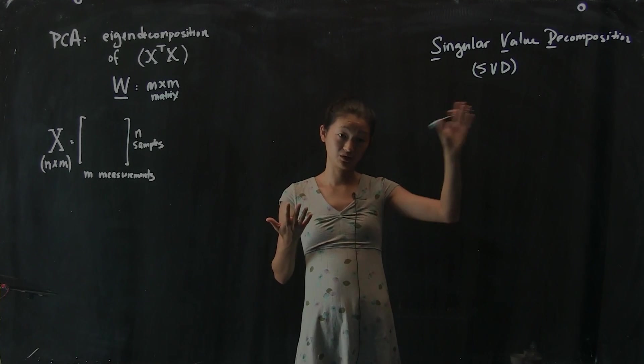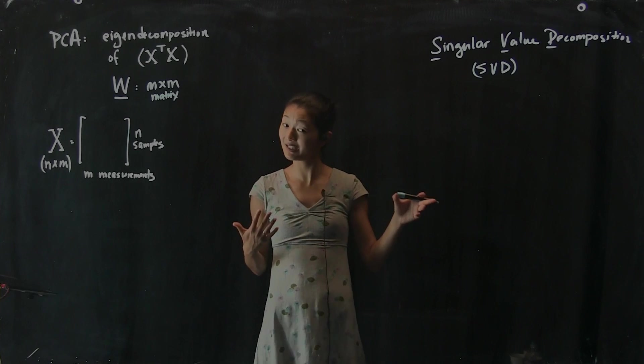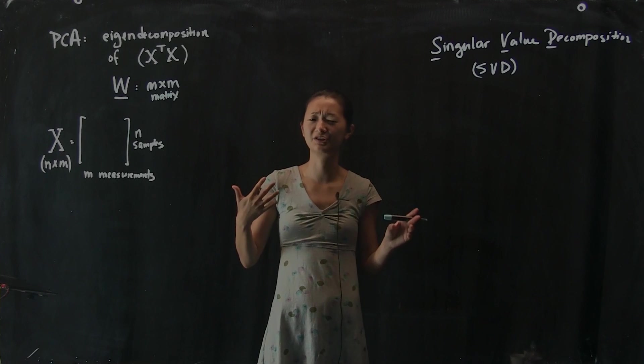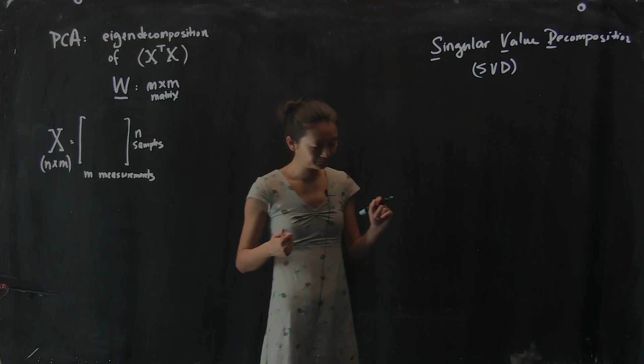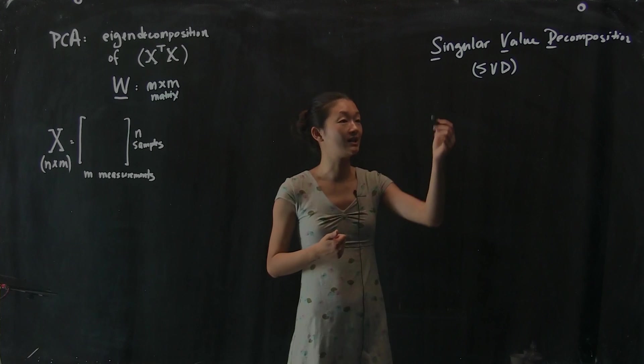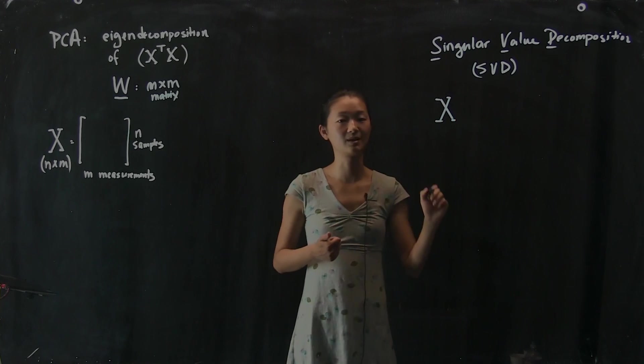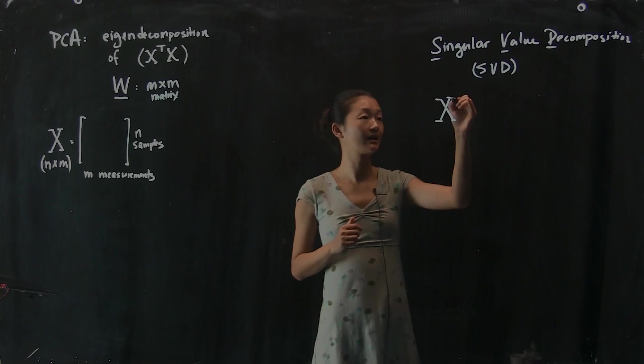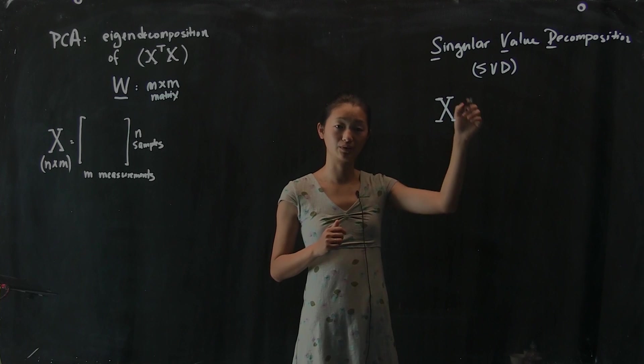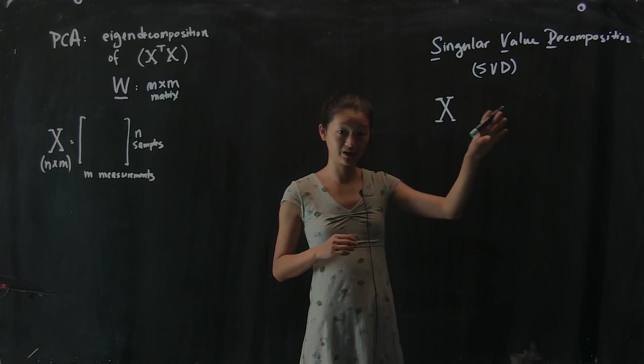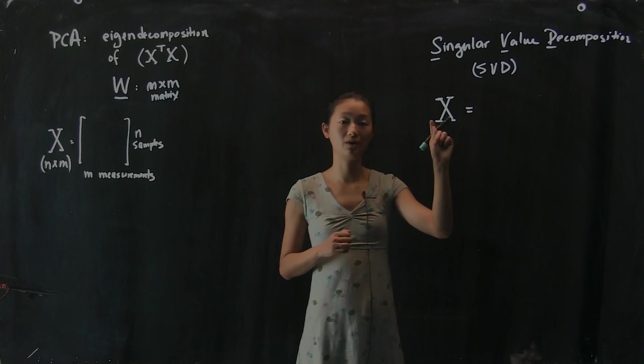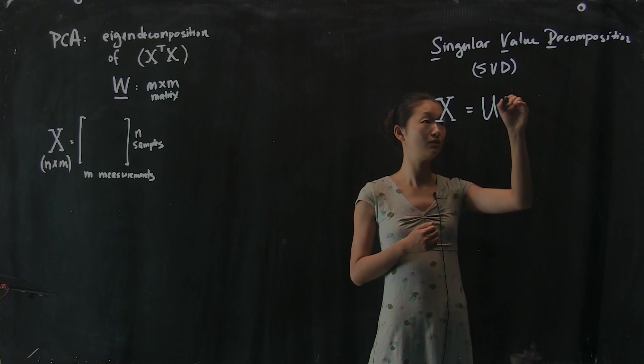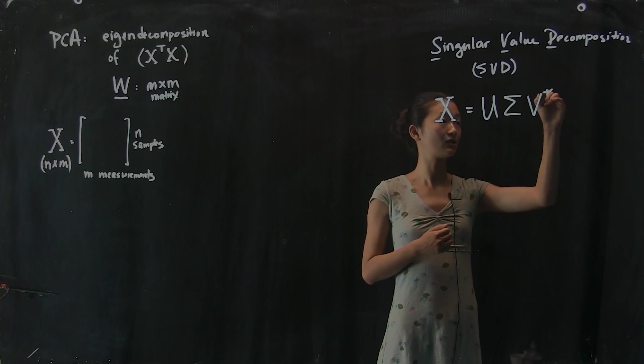So we're going to talk about the singular value decomposition. It turns out to be mathematically identical to the PCA in a certain way, but it's usually implemented differently in terms of the numerical linear algebra, how people actually compute the singular value decomposition. I also wanted you to know this word because sometimes you'll hear people talking about SVD. In your head you should really think that PCA and SVD are practically interchangeable. They're more or less the same thing. The SVD gets you started with the same data matrix X. I'm going to decompose this data matrix as a product of three different matrices. I'm going to turn one matrix X into three matrices: U, sigma, and V star.